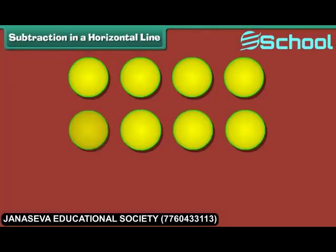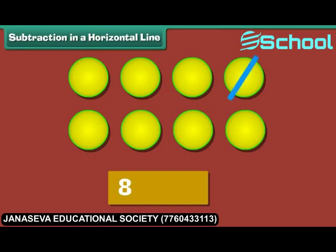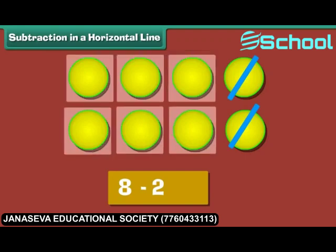To subtract two from eight, we place eight dots. Strike off two dots. Six dots remain. Therefore, six is the answer.